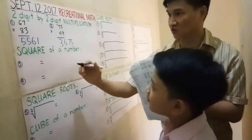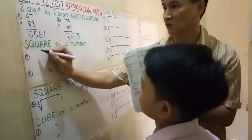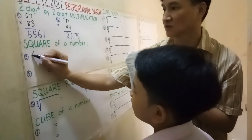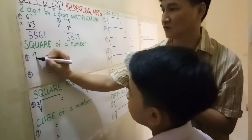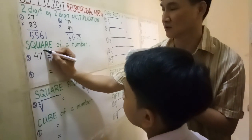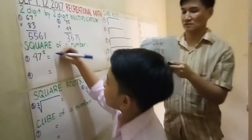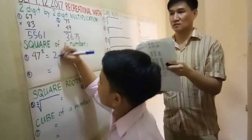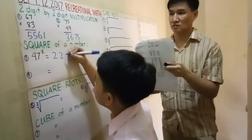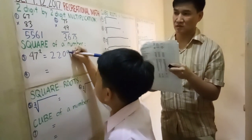We proceed to the square of a number. What is 47 squared? Answer: 2, 2, 0, 9.